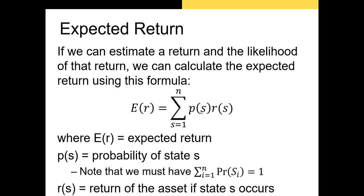and multiplying that probability by the return in that state, R sub S. And then we'll sum up all those probabilities times their returns. This left-hand side here, this is our symbol for expected return. So our expected return in this case is just the sum of all the probabilities of each state occurring times the returns in those states.